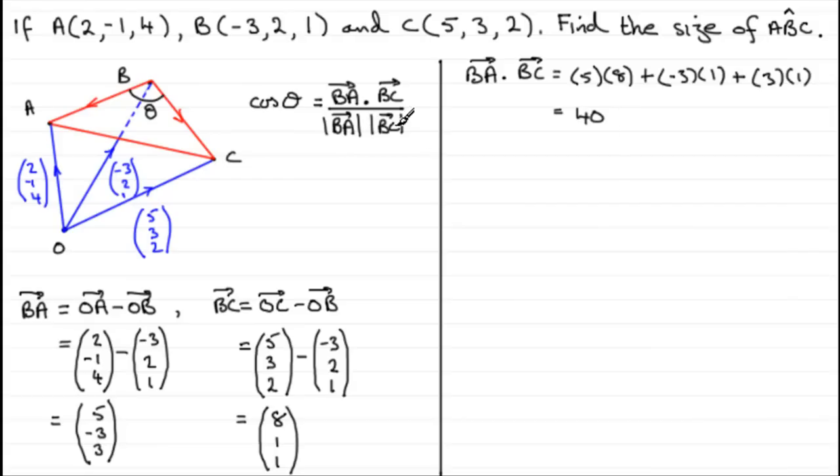We also need the magnitude of these two vectors. The magnitude of BA is going to be the square root of each of the squares of these parts added together. So it's 5 squared plus 3 squared, we don't need that minus, plus the other 3 squared. Work that out and you end up with 43, so it's the square root of 43.